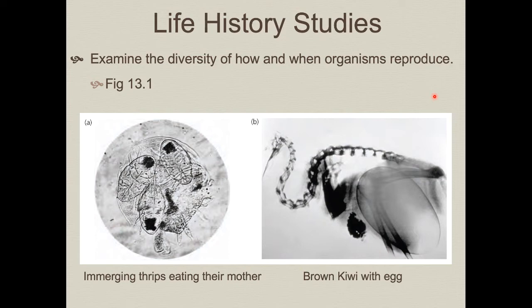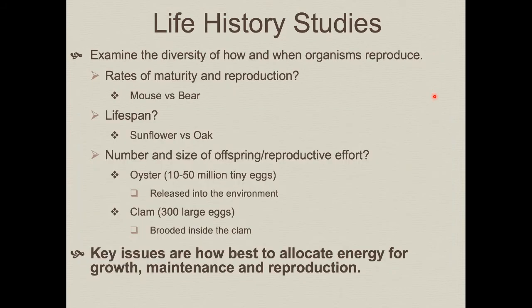So why do different species have these patterns of reproduction? Why does the rate of maturity and reproduction vary? A mouse matures within just a few days — from being born to being able to breed on its own — versus a bear, which may stay with its mother for a number of years before becoming independent, and then perhaps even longer before it is sexually capable.